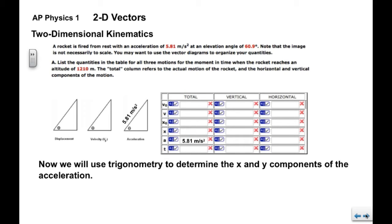We're going to use trigonometry knowing the angle theta and the hypotenuse or the magnitude 5.81 meters per second squared to determine the x and y components of this acceleration. So again, we know that the x component is the magnitude times the cosine of theta, the y component is the magnitude times the sine of theta.